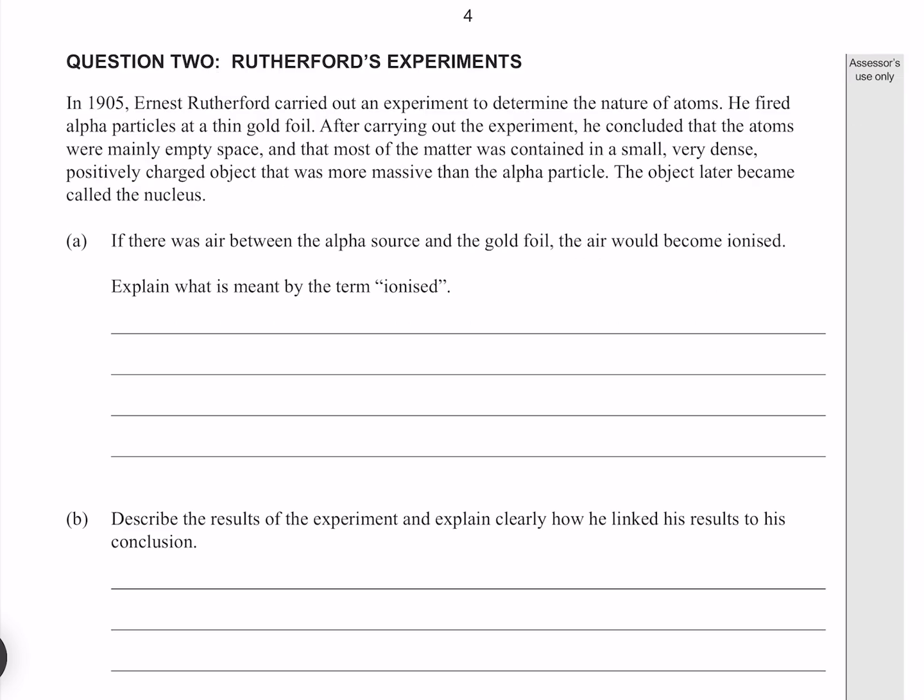Question 2. In 1905, Ernest Rutherford carried out an experiment to determine the nature of atoms. He fired alpha particles at a thin gold foil. After carrying out the experiment, he concluded that the atoms were mainly empty space, and that most of the matter was contained in a small, very dense, positively charged object that was more massive than the alpha particle. The object later became called the nucleus.